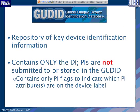GoodID — the Global Unique Device Identification Database — is a repository of device identification information. GoodID will only contain the DI, the static portion that is not changing for a given version or model. Production identifiers are not submitted to or stored in GoodID. Instead, GoodID asks you to indicate which production identifiers are on the label — for example, whether the lot number is on the label: yes or no. That is the only information collected about a production identifier in GoodID.